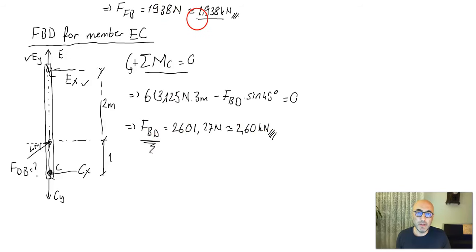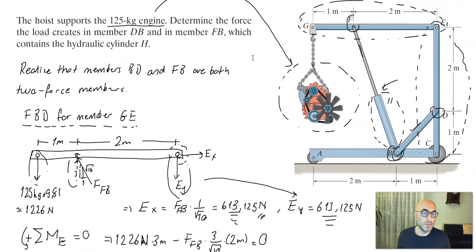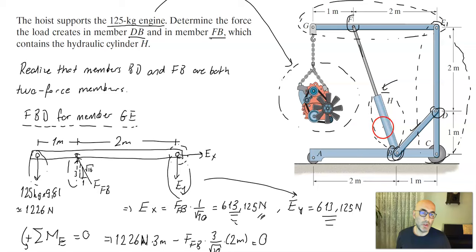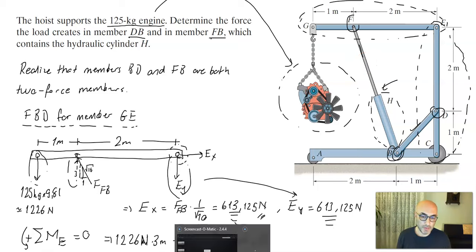So we have found FBD = 2.60 kN and FFB = 1.938 kN. These are the forces created by the engine load in member DB and in member FB, which contains the hydraulic cylinder H. This concludes the solution of this problem.